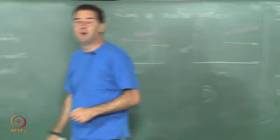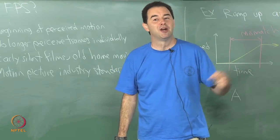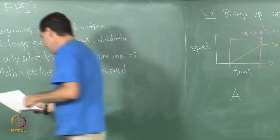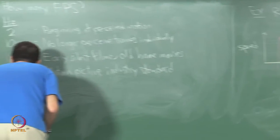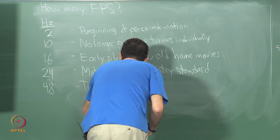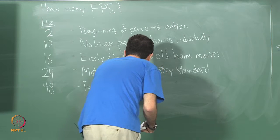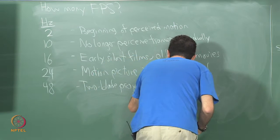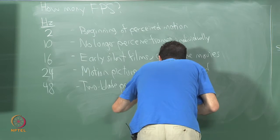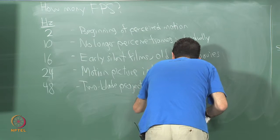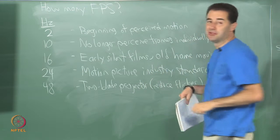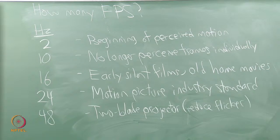So, people started making multi-blade projectors that will show the same frame multiple times. So, you can then turn 24 into 48 with a two-blade projector to avoid, or let us say reduce flicker. Really it is reducing perceived flicker. I guess technically there is twice as much flickering happening, but it is reducing perceived flicker.